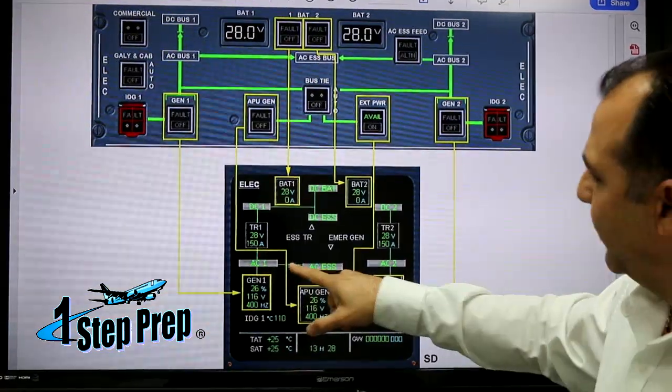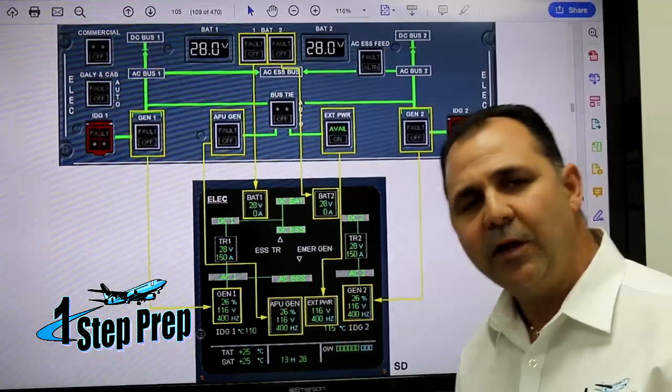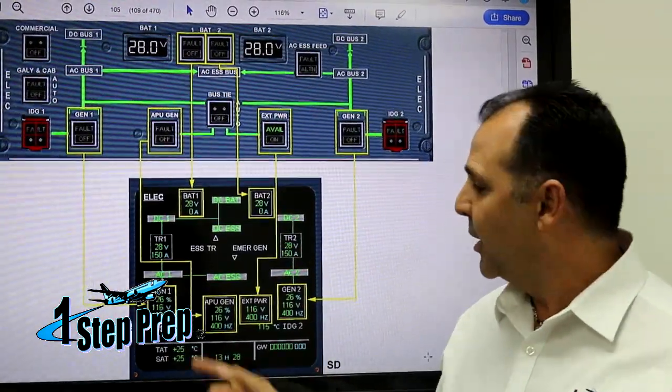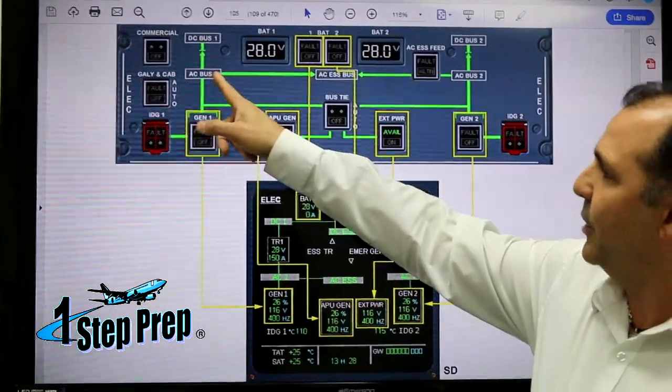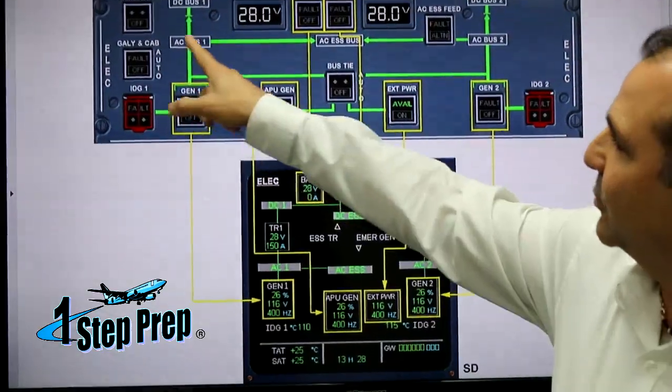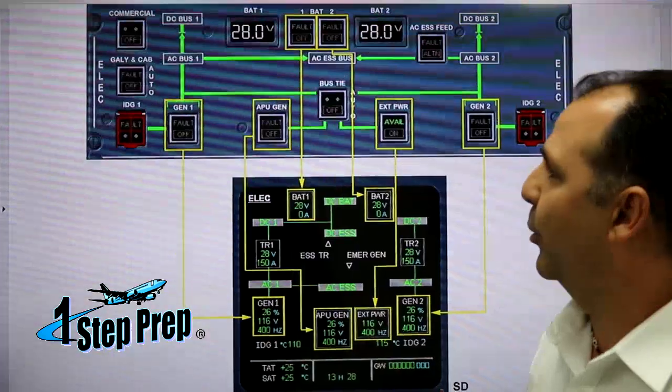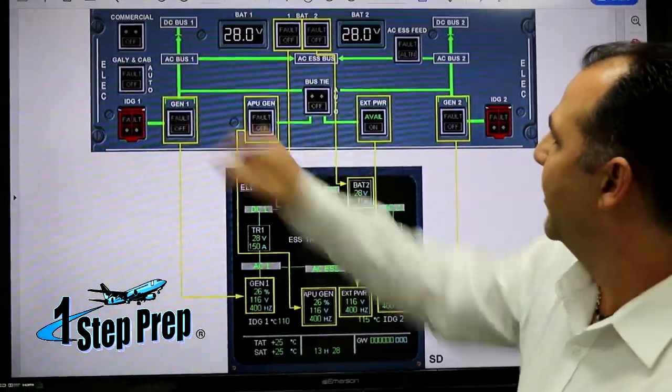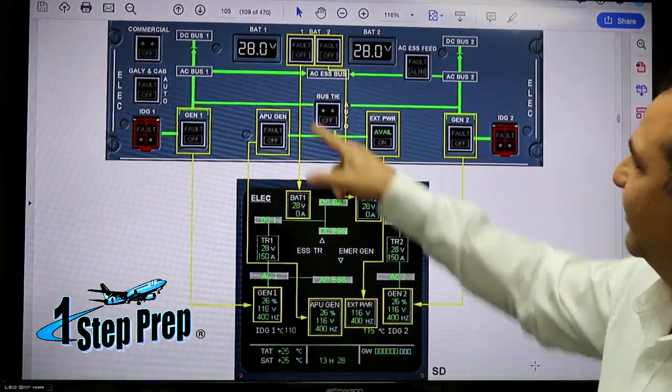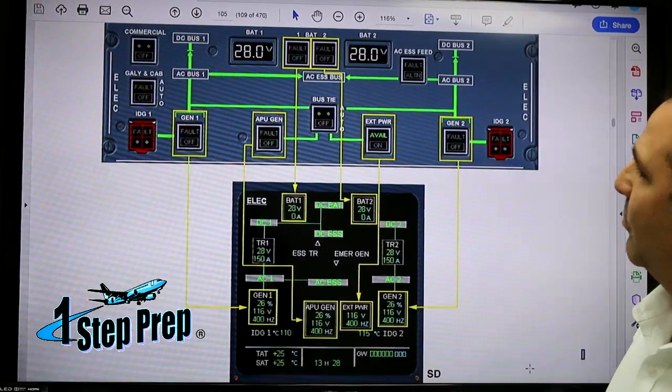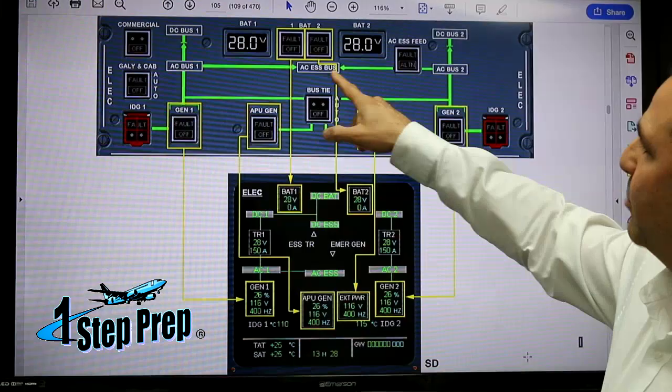Now what happens if we lose AC Bus 1? One of the ways that we can lose AC Bus 1 is if we lose generator number one. Normally AC Bus 1, if you follow the line, gets its normal power source from generator 1. So if we lose generator 1 and we have the bus tie in the off position, AC Essential Bus is not going to be powered.